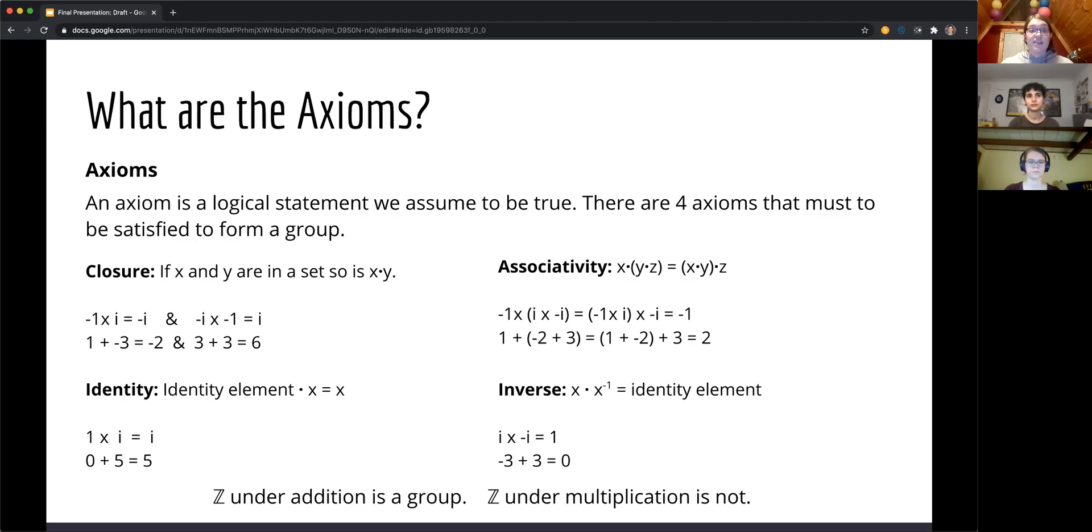The third axiom is identity. This axiom simply states that there must exist some identity element in a set. In a set using multiplication as its binary operation, that identity element would be 1 because 1 times any element is that element. But in addition, the identity element would be 0 because 0 plus any element is that element.